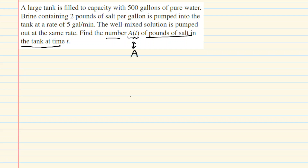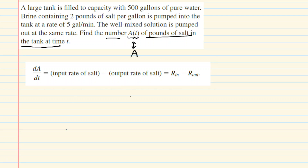To find A(T), we have to make sure that we satisfy this differential equation, which tells us that the rate of change in the amount of salt per unit time is equal to the input rate of salt minus the output rate of salt — or more simply, R_in minus R_out. We need to come up with expressions for both R_in and R_out.